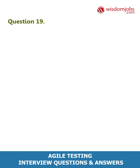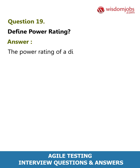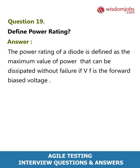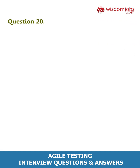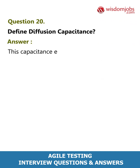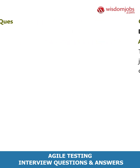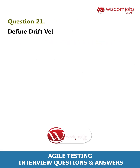Question 19: Define power rating. Answer: The power rating of a diode is defined as the maximum value of power that can be dissipated without failure, where Vf is the forward biased voltage. Question 20: Define diffusion capacitance. Answer: This capacitance effect is present when the junction is forward biased; it is called diffusion capacitance.